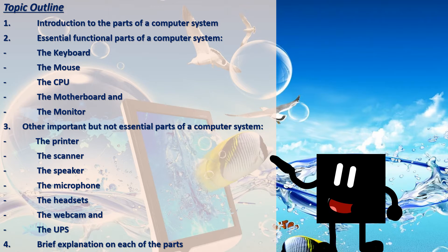Topic outline: 1. Introduction to the parts of a computer system. 2. Essential functional parts of a computer system — the keyboard, the mouse, the CPU, the motherboard, and the monitor. 3. Other important but not essential parts of a computer system — the printer, the scanner, the speaker, the microphone, the headset, the webcam, and the UPS.